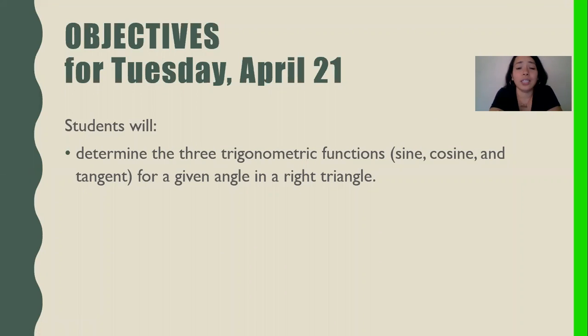Today you're going to determine the three trigonometric functions for a given angle in a right triangle. This is what we covered at our last session. Sine, cosine, and tangent. We're going to do that again with a little bit more detail this time and an additional step.